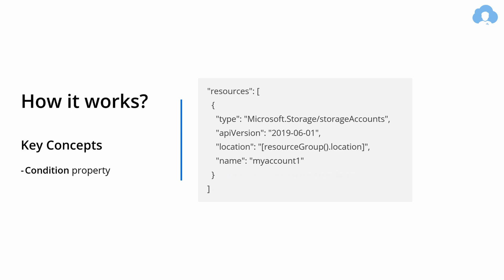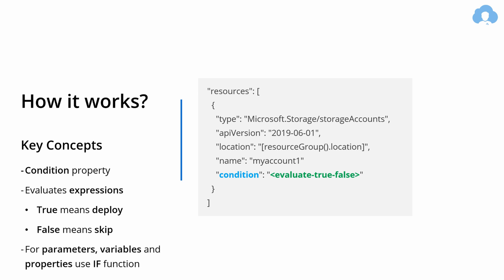There's a condition property that is applied on a resource, and this property will accept an expression. Whenever this expression returns a true value, the resource will be deployed, otherwise it will be skipped. If you need to perform conditional checks for parameters, variables, or properties, simply use the if function, because condition is reserved only to resources.